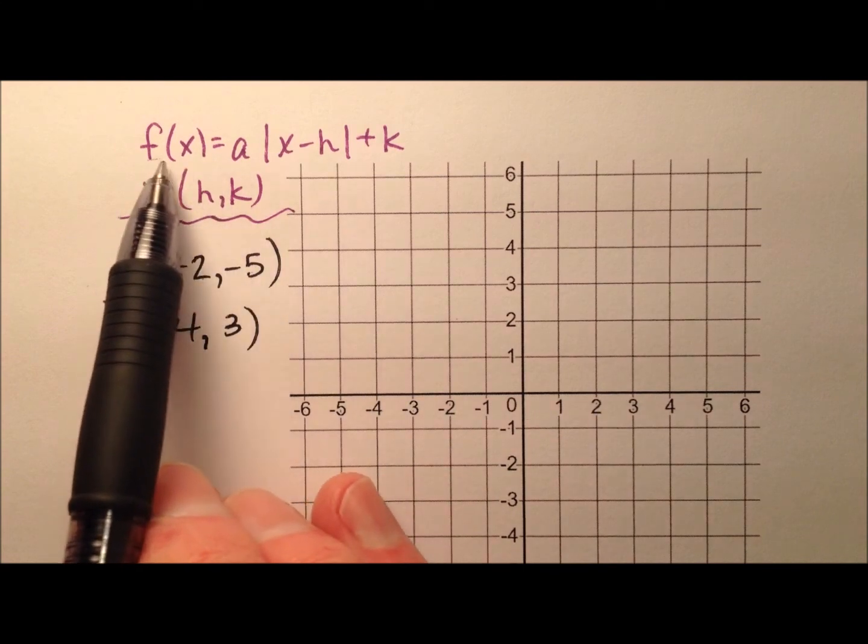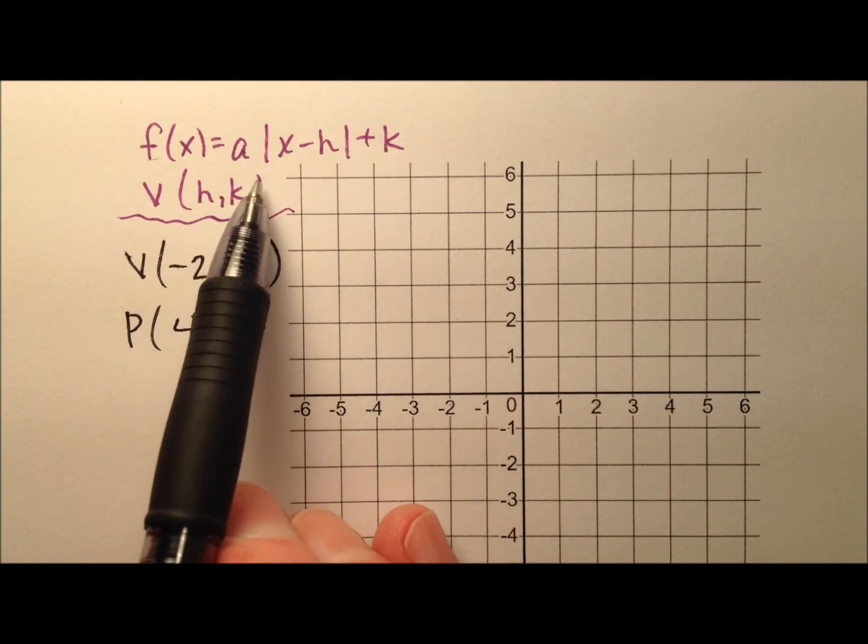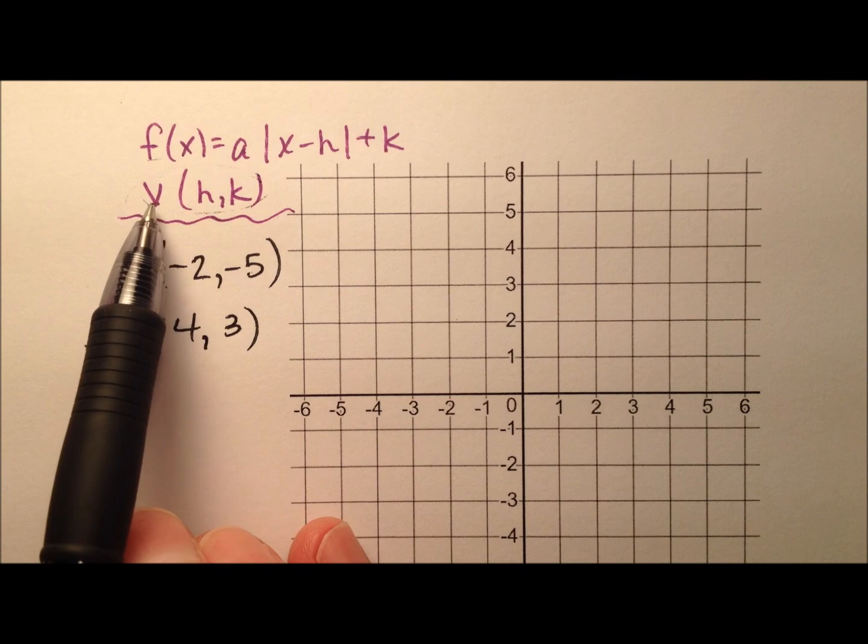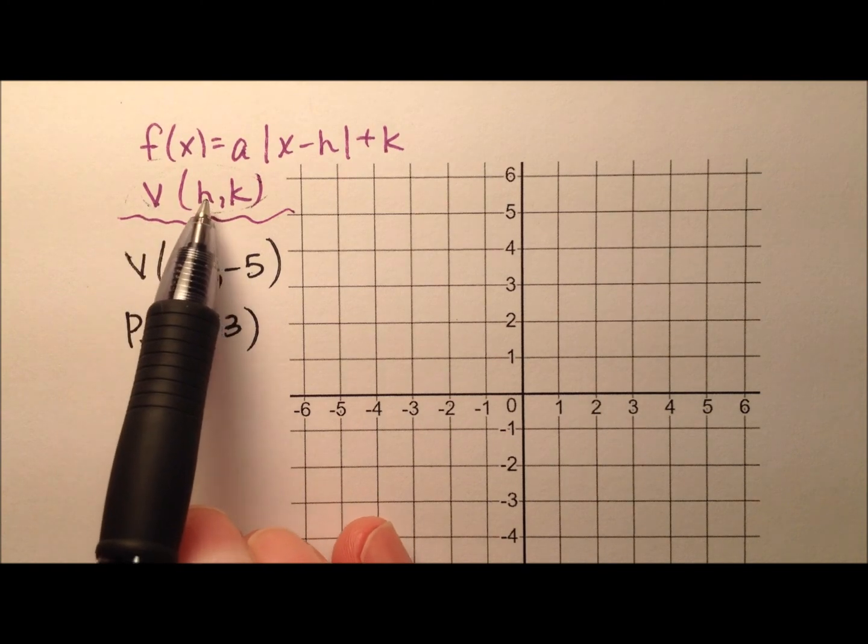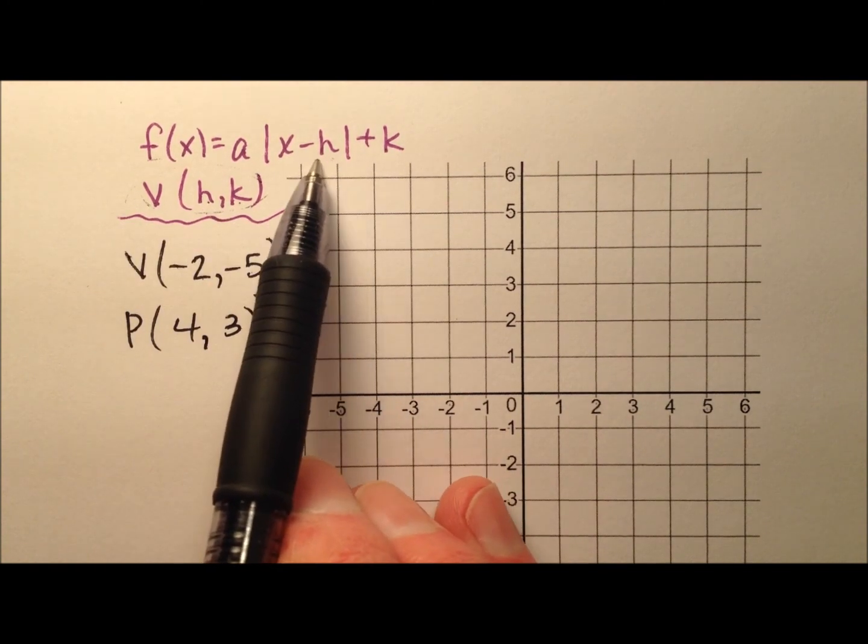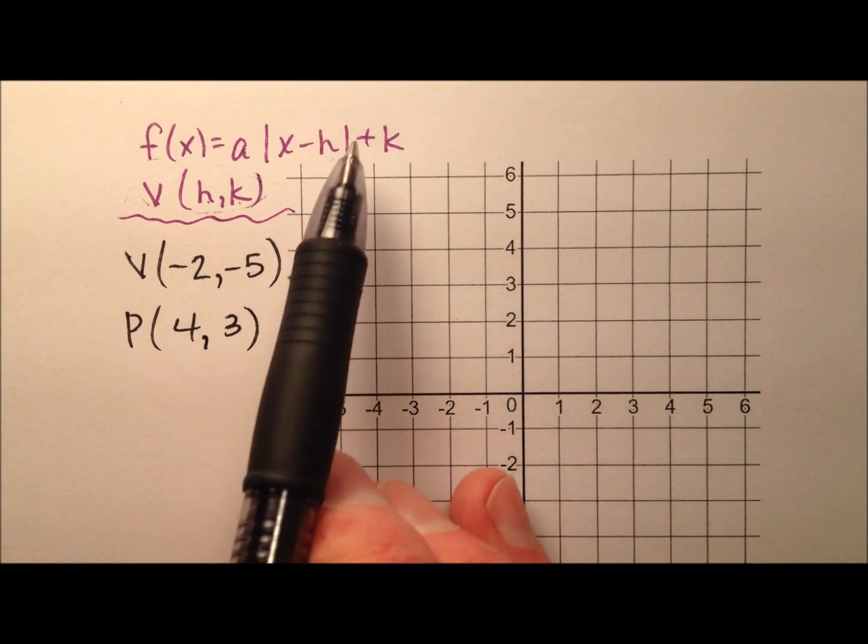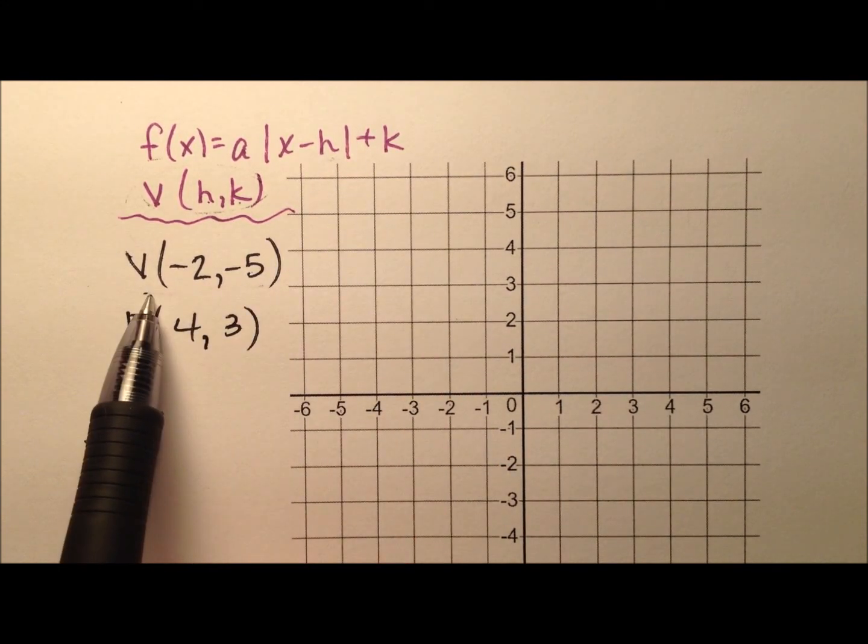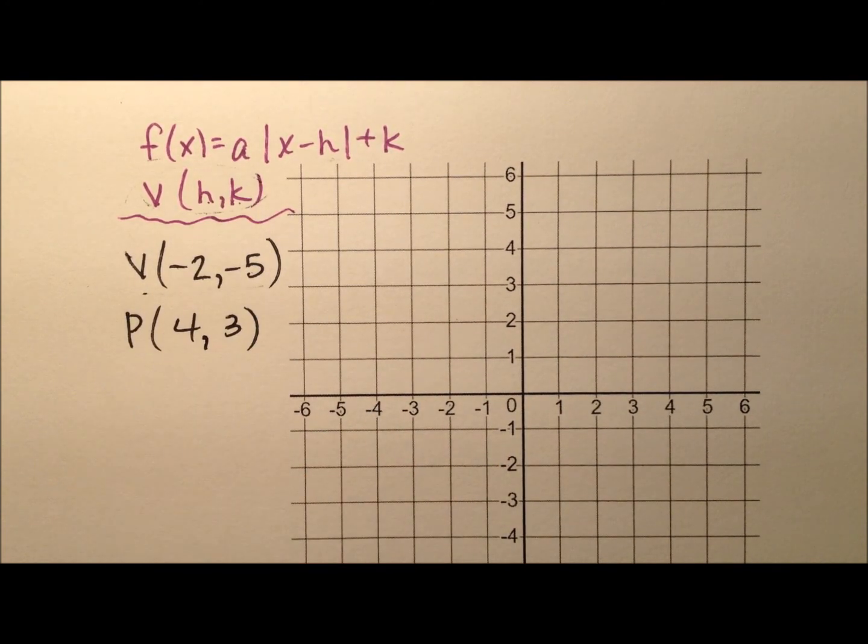Up here we have written the general form for our absolute value functions, f(x) = a|x - h| + k, and we also know that the vertex of our absolute value function is given by (h, k). So most of these values it looks like we know already, so really all we're looking for is a.